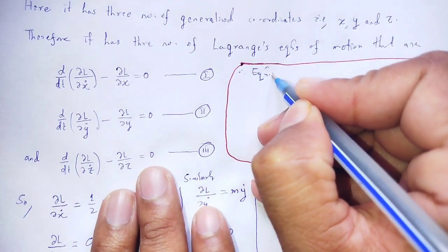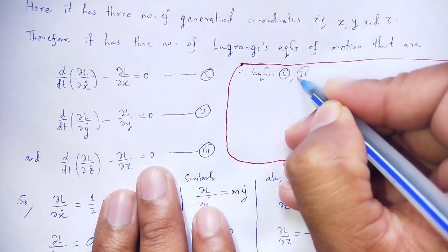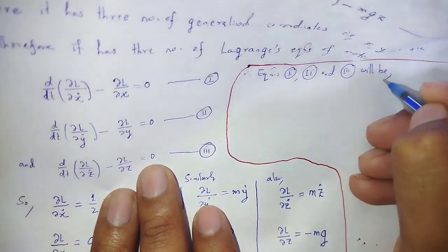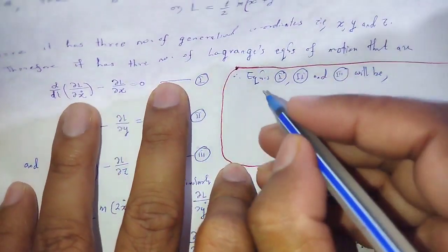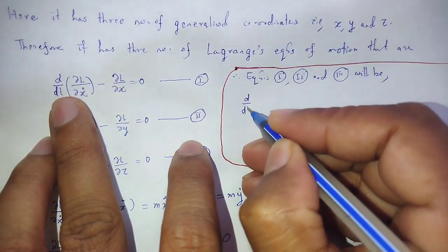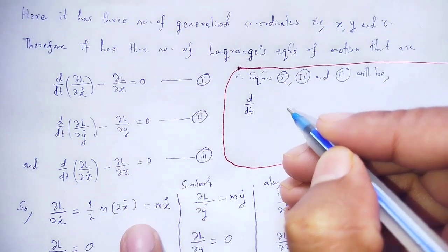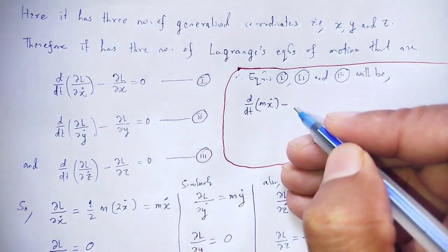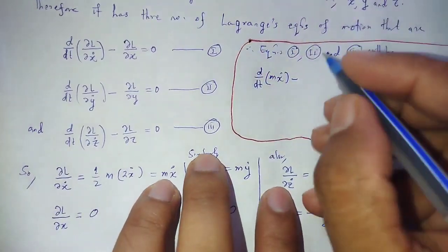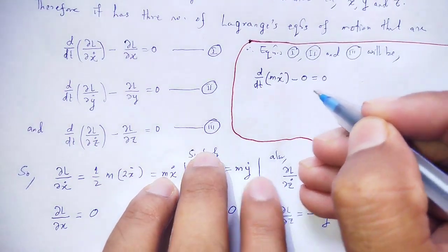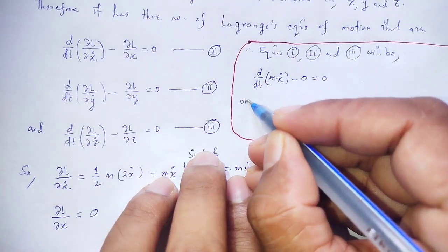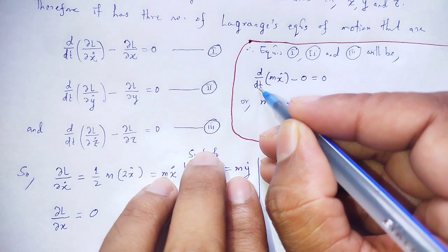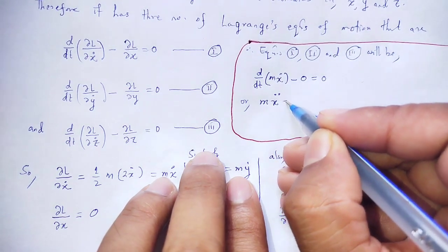For equation (i): d/dt(∂L/∂ẋ) = mẋ, and ∂L/∂x = 0. So mẋ − 0 = 0. Since m is constant, differentiating ẋ with respect to time gives ẍ = 0.